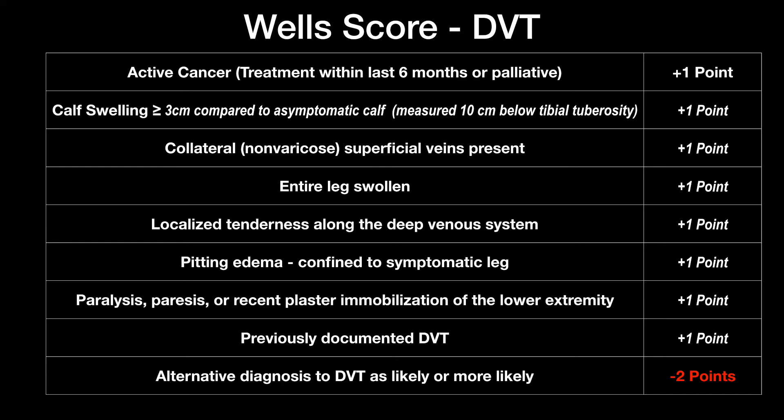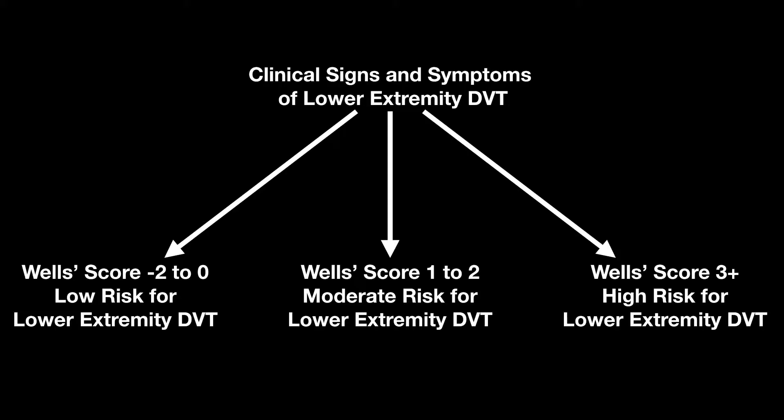So let's look here. Initially we have to calculate a Wells score. Go ahead and hit pause on the video so you can read through them. Essentially you get one point for everything, and then you get negative two points if you have a more likely diagnosis. We're going to evaluate the different risk factors and end up in a low, moderate, or high risk group. Some guidelines just use low and high risk, but in this case we're going to discuss all three.